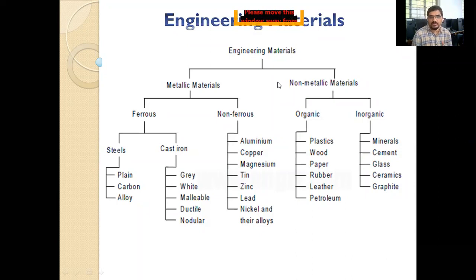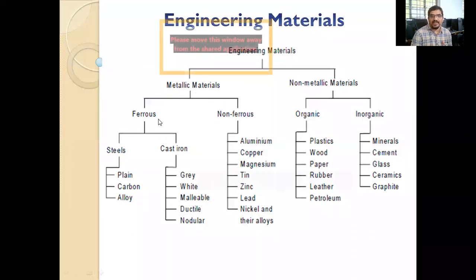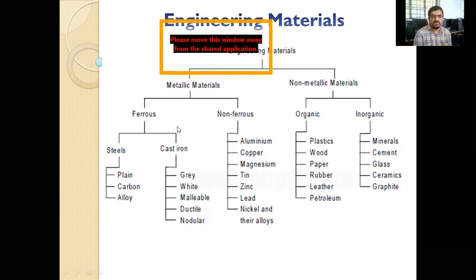As a designer, we must know what different materials are available in the market for our design. Basically, materials are mainly of two types used in machine design or engineering design: metallic and non-metallic. Metallic has ferrous materials — basically from the family of steel — and non-ferrous. Non-metallic has organic and inorganic.